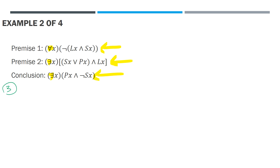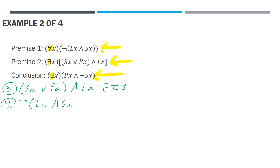For line three, let's work with premise two and instantiate the constant a — it's a free variable we haven't used previously. We get: (sa or pa) and la, by existential instantiation, line two. For line four, we'll work on premise one: not (la and sa), by universal instantiation, line one. For line five, we'll do De Morgan's rule on line four to get: not la or not sa, by De Morgan, line four. Notice that here we have la in line three, which is contradicted by not la.